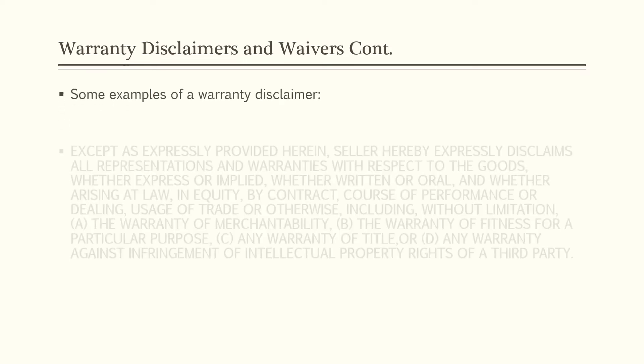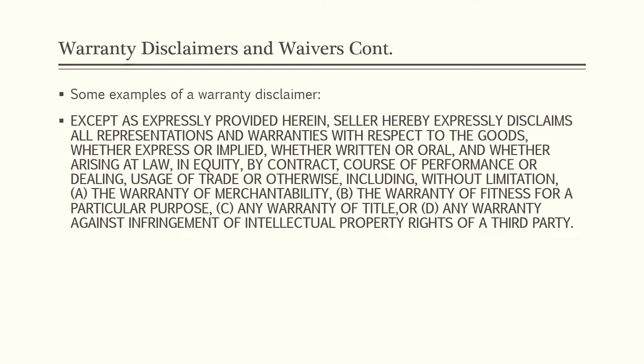The first example is a comprehensive disclaimer: 'Except as expressly provided herein, seller hereby expressly disclaims all representations and warranties with respect to the goods, whether express or implied, whether written or oral, and whether arising at law, in equity, by contract, course of performance or dealing, usage of trade, or otherwise, including without limitation: (a) the warranty of merchantability, (b) the warranty of fitness for a particular purpose, (c) any warranty of title, or (d) any warranty against infringement of intellectual property rights of a third party.' This is an extreme disclaimer — the instructor noted this would not be recommended and would be renegotiated or business would not be done with this seller.